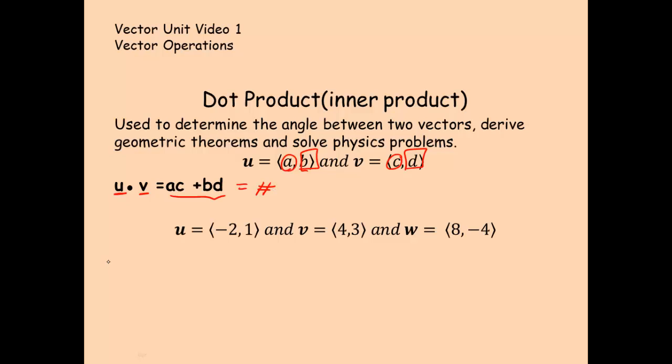So let's try u dot v for this example. So I'm going to then multiply negative two times four plus one times three. This answer for u dot v is negative eight plus three equals negative five. So my answer for the dot product is just a number.